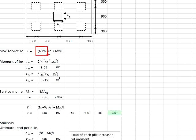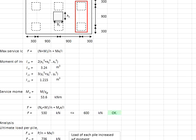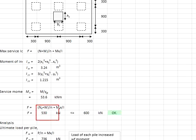The axial load is determined for the serviceability limit state. Due to the moment rotation, the largest axial load on the piles is in reference to the two outermost piles. Substituting the relevant values into the formula — with x referring to the distance to those piles — gives an axial load of 530 kN. This value is less than the pile capacity of 600 kN, so the proposed six piles are acceptable.